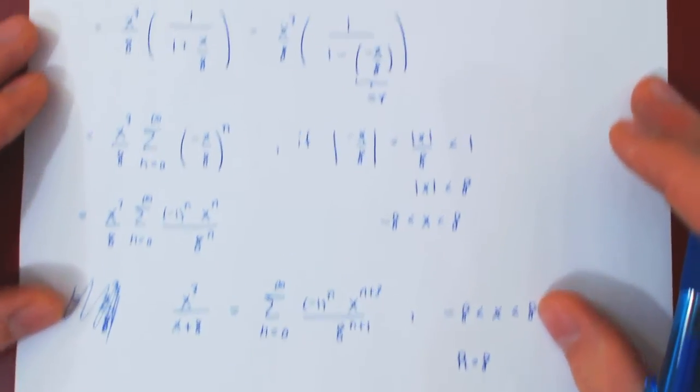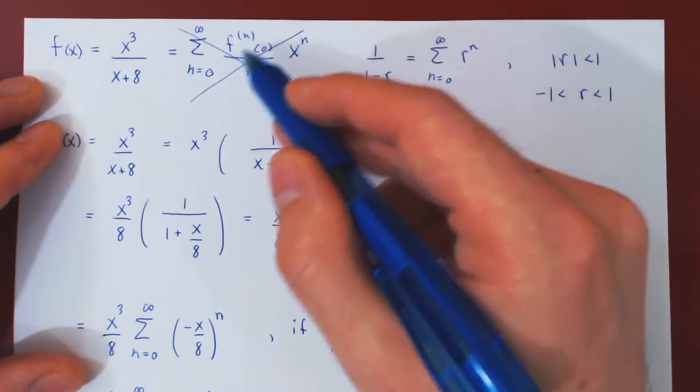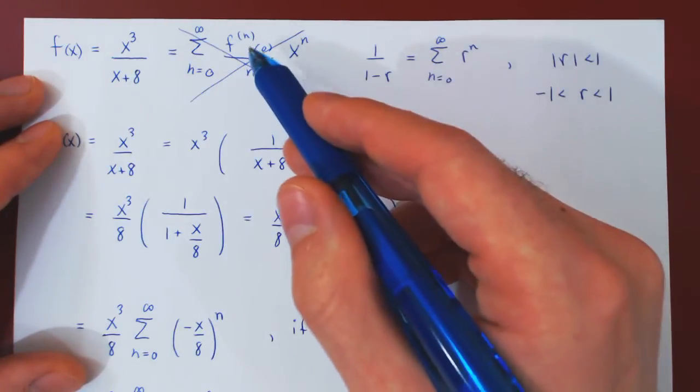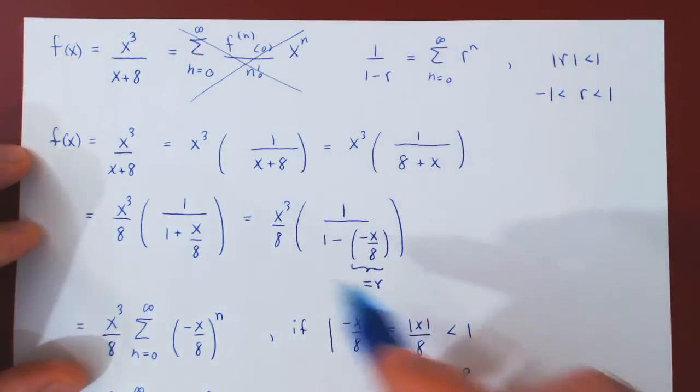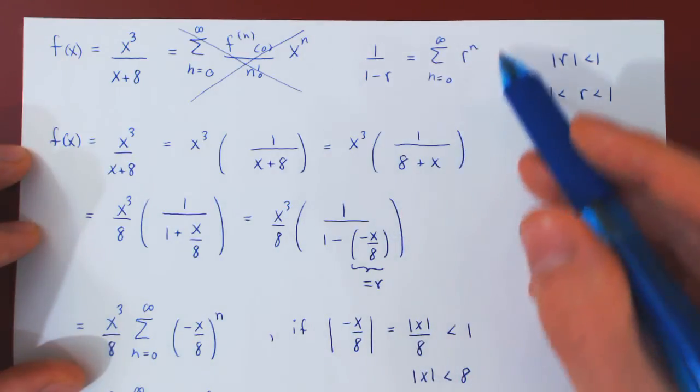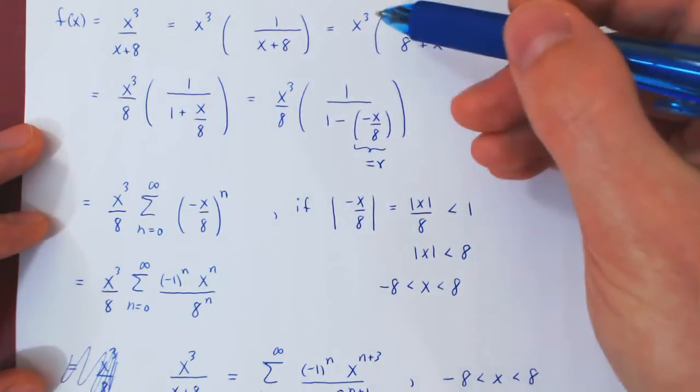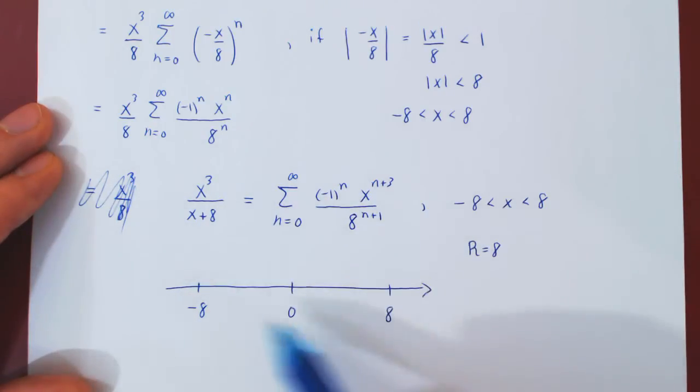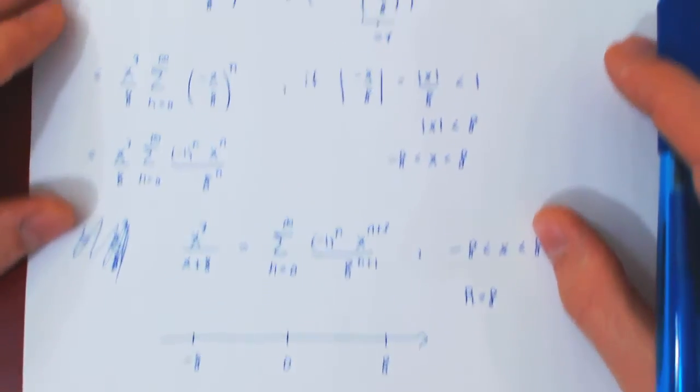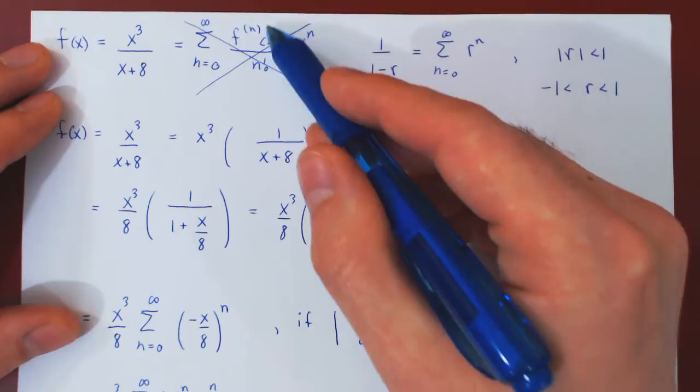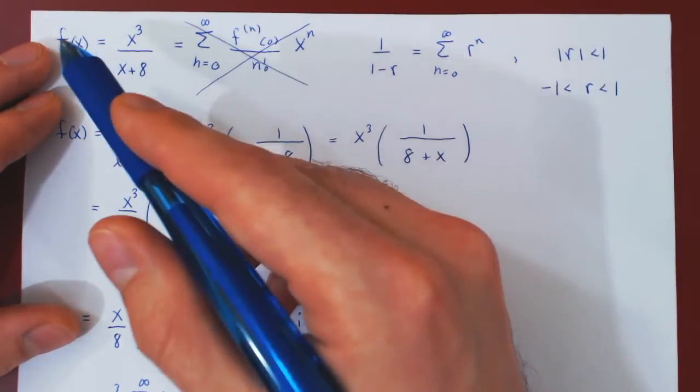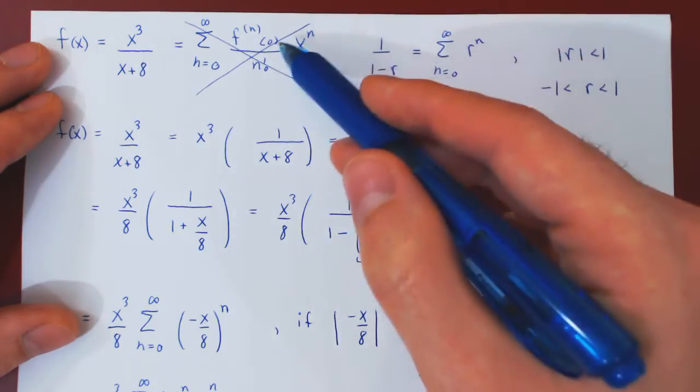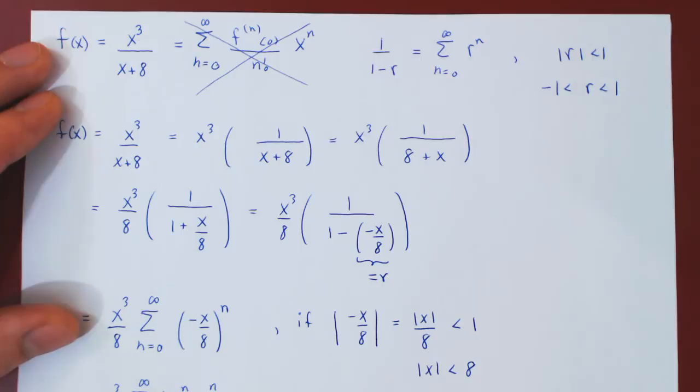And what was elegant about the solution is we did not have to find higher derivatives of the function, and therefore getting more and more messy quotients from the quotient rule, then evaluating at 0 and hopefully seeing a pattern, we were able with a little bit of algebra and our knowledge of geometric series to find a very elegant way of obtaining the Maclaurin series of the function x cubed over x plus 8.